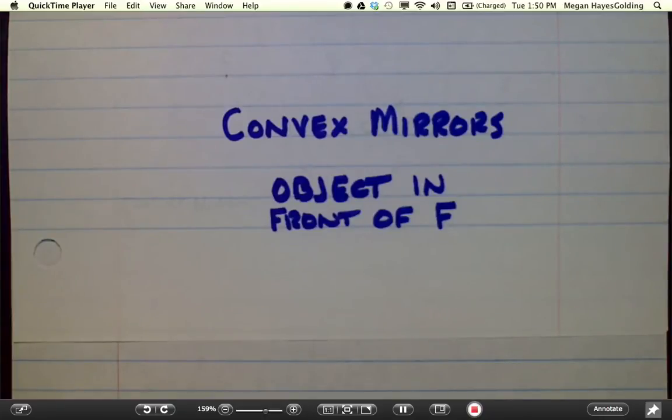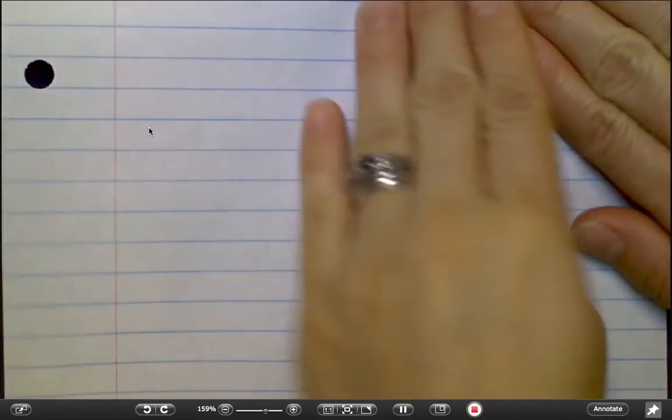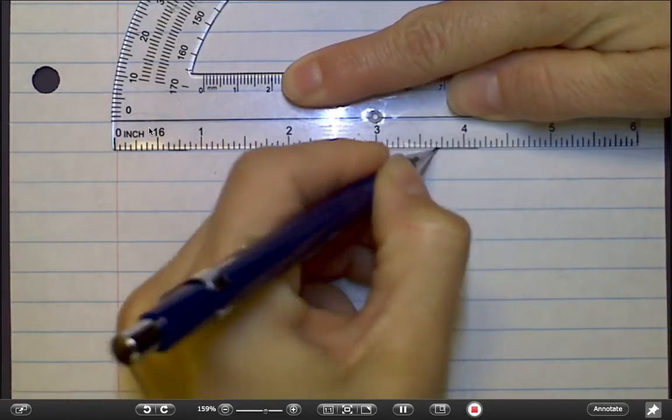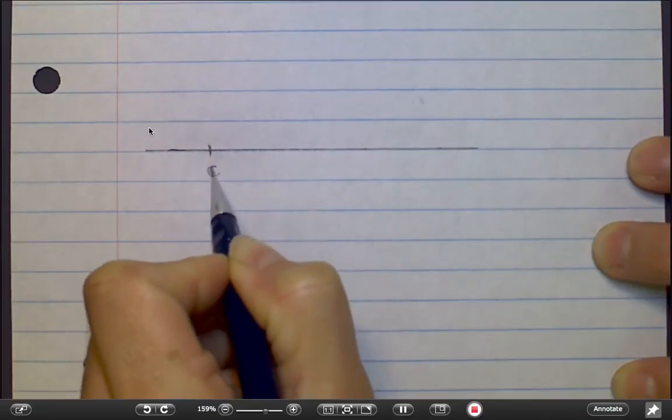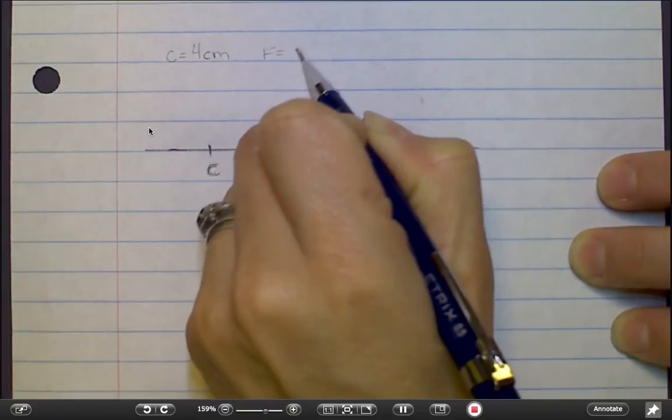Ray diagrams for convex mirrors when the object is in front of F. Step one, let's draw a convex mirror. Principle axis. I'm going to arbitrarily choose a center point C. Let's say in this case that my center of curvature for this convex mirror is 4 centimeters, meaning that the focal point is 2 centimeters.